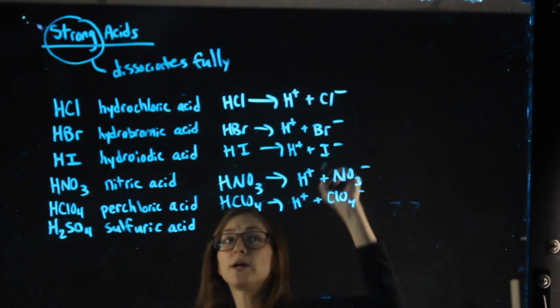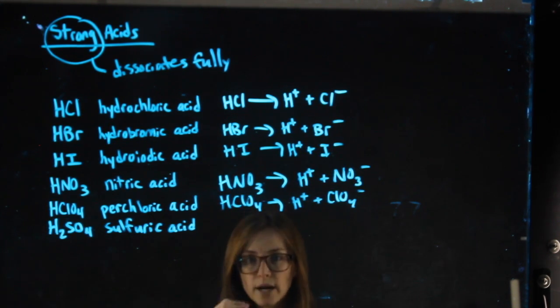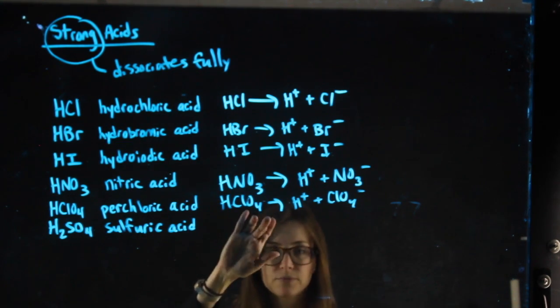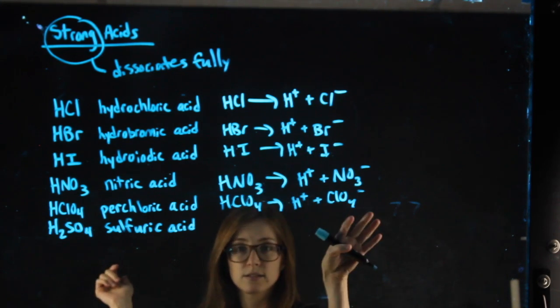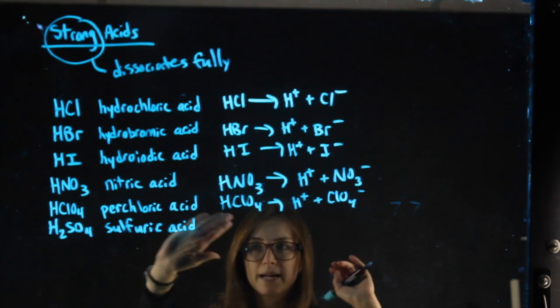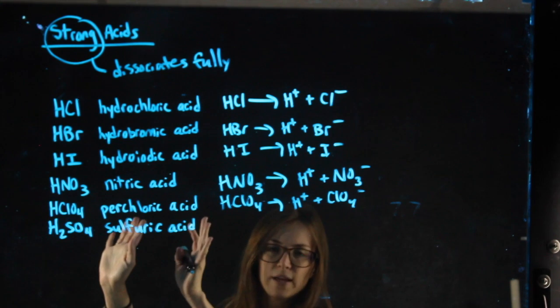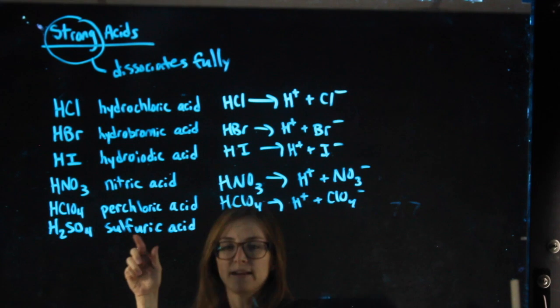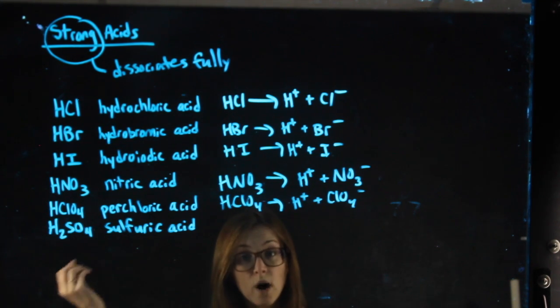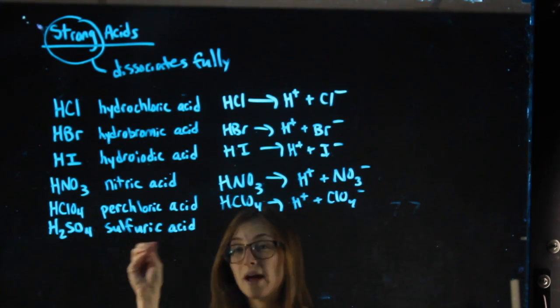So the reason I'm showing you these dissociations, one, to drive home the point that it's strong, so we use a single arrow. Two, if you notice, these are all already balanced. H2SO4 wouldn't be, but again, everything with H2SO4 is a lie, so ignore it. These are all balanced, and all of our coefficients are one. That makes our lives way easier.